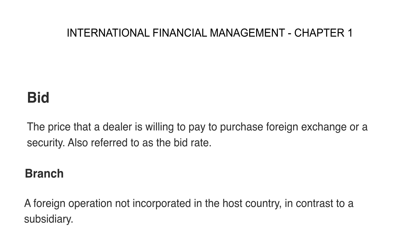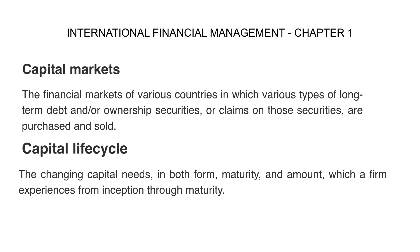Bid is the price that a dealer is willing to pay to purchase foreign exchange or a security. It is also referred to as a bid rate. Branch is a foreign operation that is not incorporated in the host country, in contrast to a subsidiary. Capital markets are the financial markets of various countries in which various types of long-term debt and ownership securities or claims on those securities are purchased and sold.